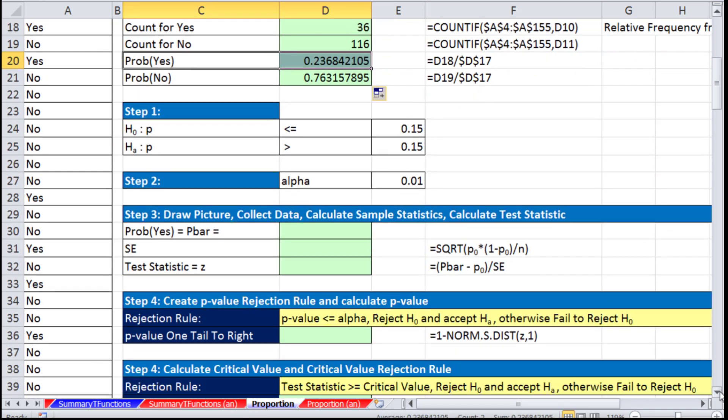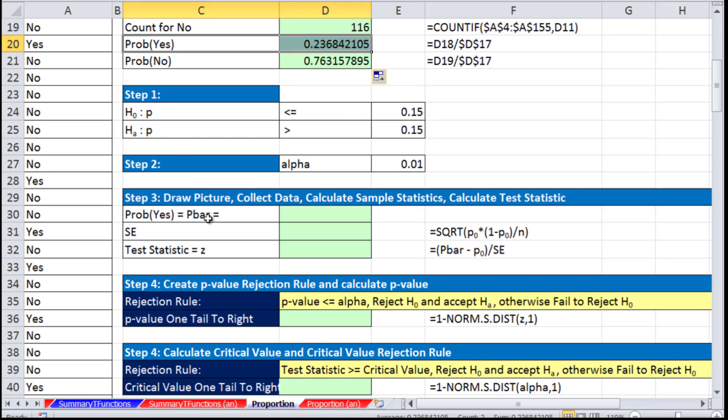We come down here. We have step one, step two, step three. We have our 0.2368—that'll be our P-bar. We have to calculate standard error. The formula is page 28 in the PDFs, but here it is right here. We've done this in earlier chapters.